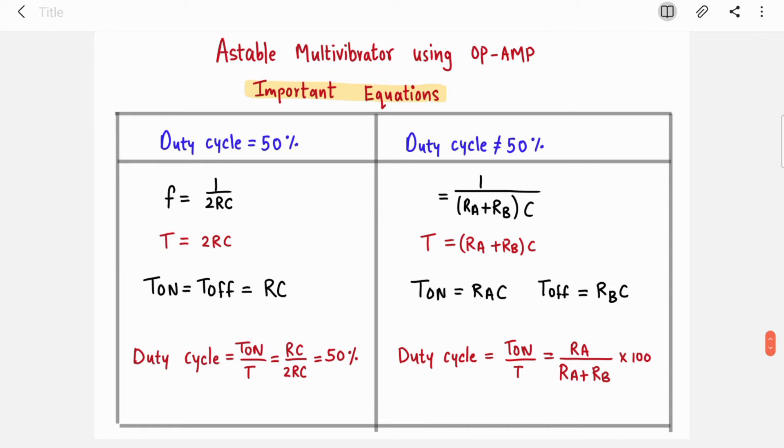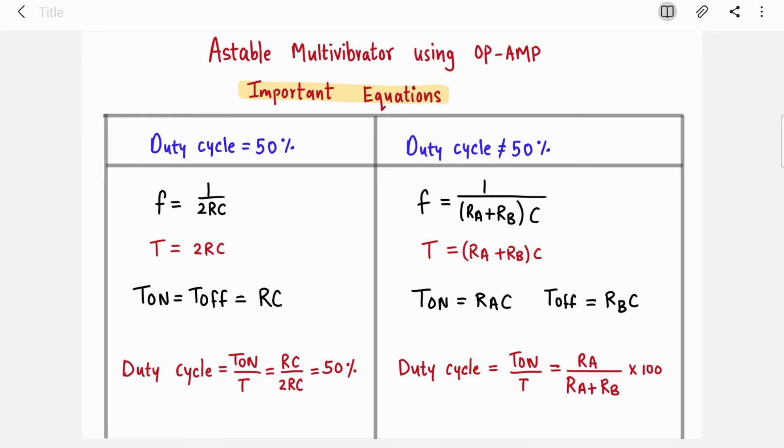What are the important equations? In the first case where duty cycle is 50 percent, your frequency is 1 upon 2RC. In another case, your frequency is 1 upon (RA + RB) into C. Time period T was 2RC, now your time period is (RA + RB) into C.